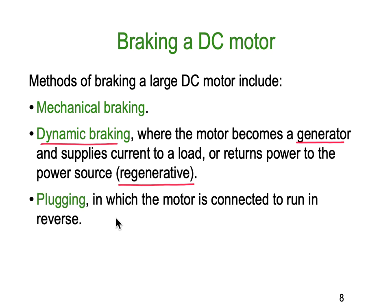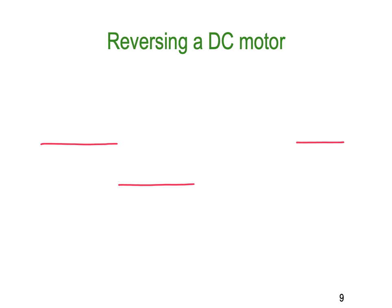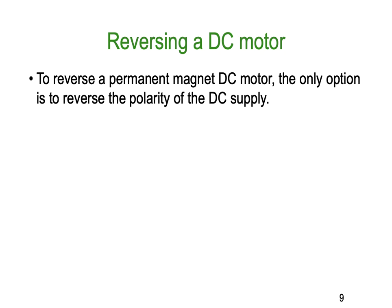Plugging is where the motor is simply connected to run in reverse. The motor is running in one direction and you switch it into reverse, which puts the brakes on big time. But you've got to have a supply capable of providing very large currents. To reverse a permanent magnet motor, the only option is to reverse the polarity of the supply — because the permanent magnet doesn't reverse, you're only reversing the armature relative to the fixed magnetic field.